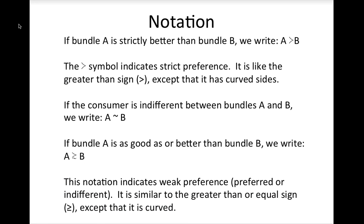Graphically, the assumption of convex preferences means that the set of all points as good or better than those on the indifference curve — the weakly preferred set — is a convex set. Let's review all our assumptions: preferences are complete (consumers can decide about any pair of bundles); reflexive (each bundle is at least as good as itself); transitive (avoids circularity in choices); goods are good so more is always better and there is no best point; and preferences are convex so averages are preferred to extremes.